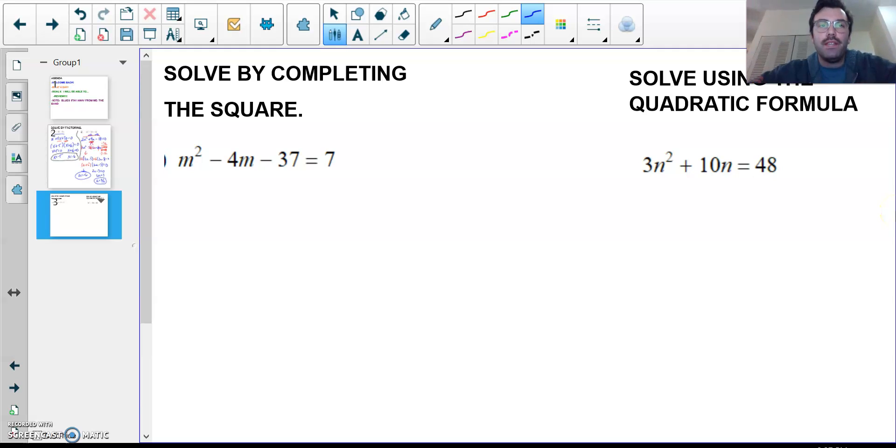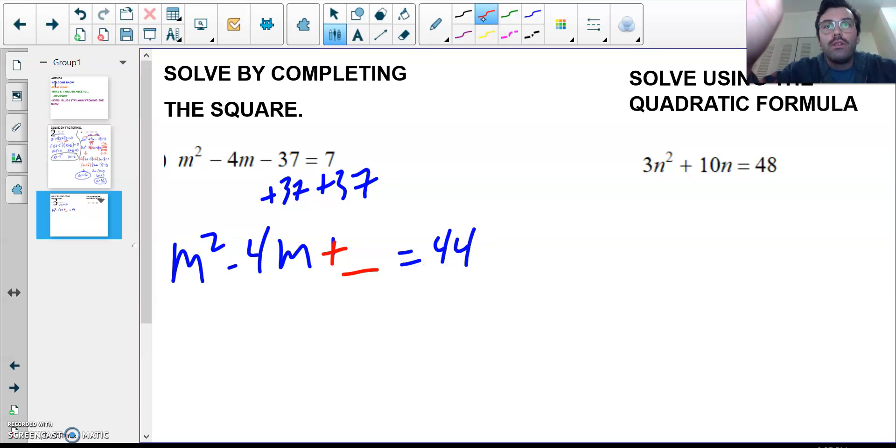So, here on this one, we're going to solve by completing the square. Remember, to complete the square, I need to move my C to the other side. So, I'm going to add 37. So, I get m squared minus 4m. Plus, remember we're doing now, now we have to do the plus blank. Equals 44 plus blank. Remember, to find our blank term, I take negative 4 divided by 2, which is negative 2, and then square it, which is 4. And that goes in here.